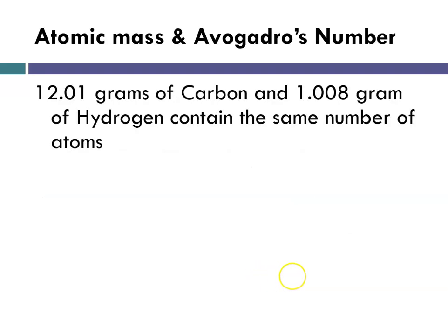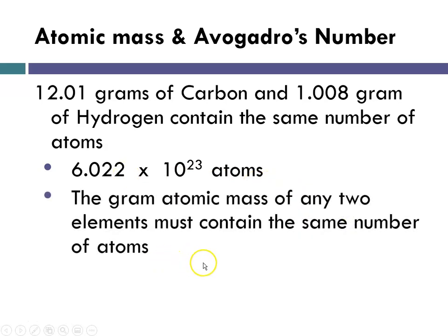So for instance, carbon would be 12.01 and hydrogen would be 1.008. And when I have those masses of those two elements, it means that I have the same number of atoms, because these are elements I'm talking about. And so 12.01 grams of carbon and 1.008 grams of hydrogen both contain 6.022 times 10 to the 23rd atoms. The gram atomic mass of any two elements must contain the same number of atoms.